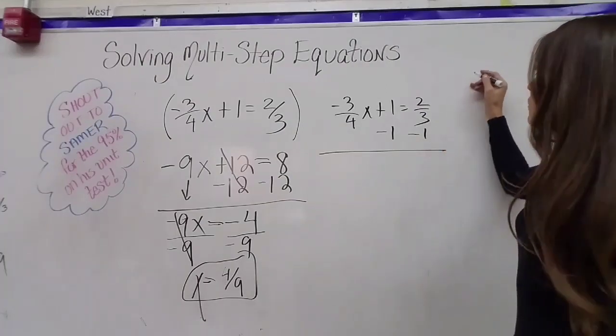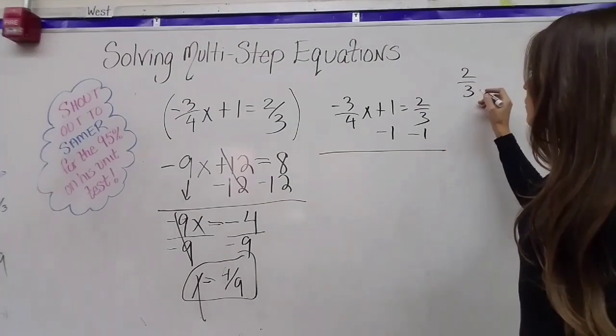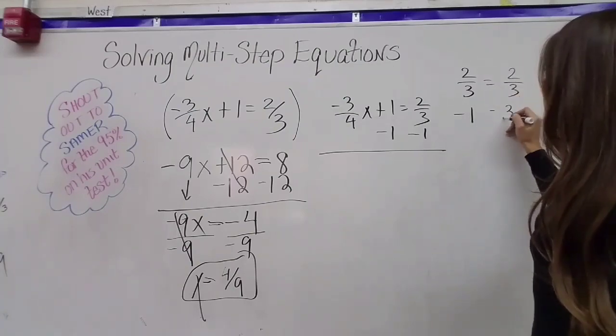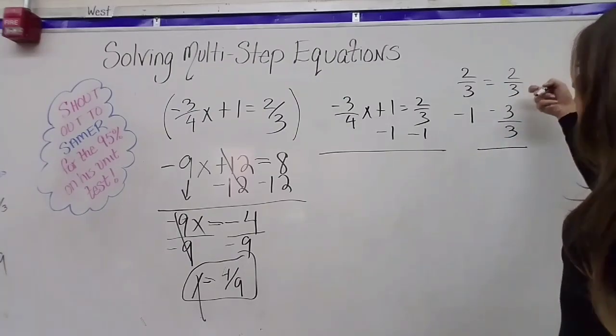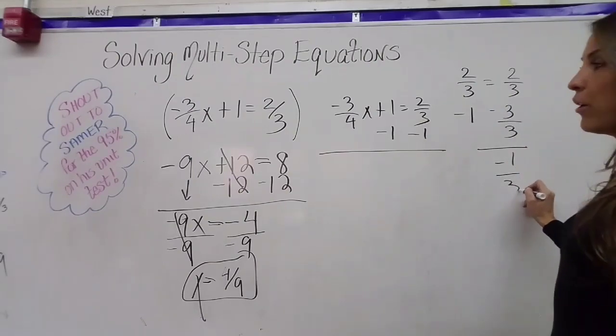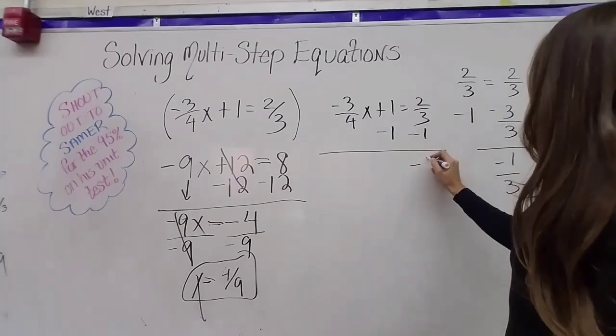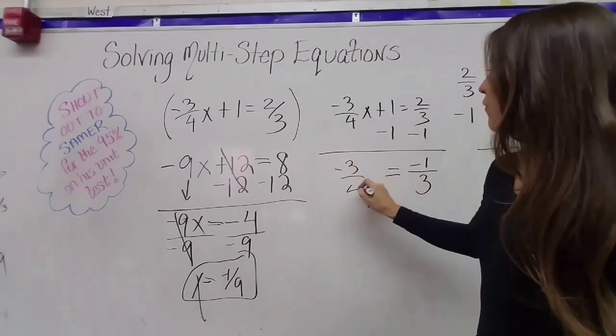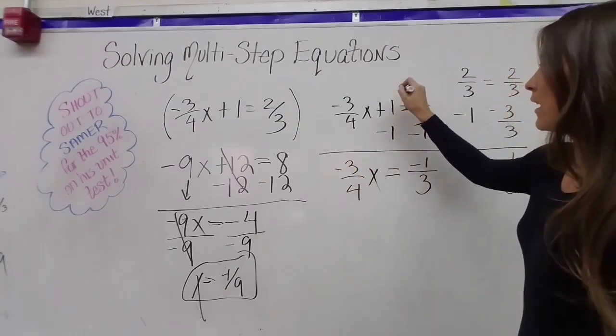So now you might have to go on the side to do this. Two-thirds minus one. So you need common denominators. So two-thirds minus one is the same thing as two-thirds minus three over three, which gives me negative one-third. So on this side, I'm going to get negative one-third equals negative three-fourths x because one plus negative one is zero.